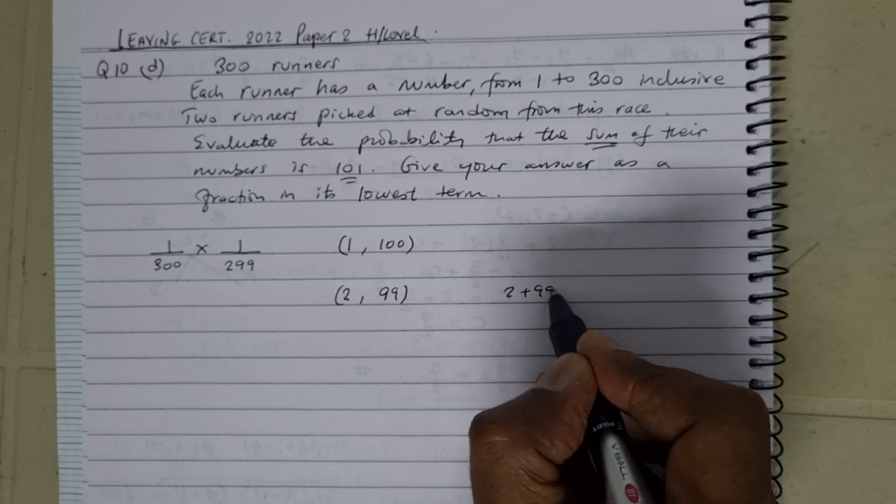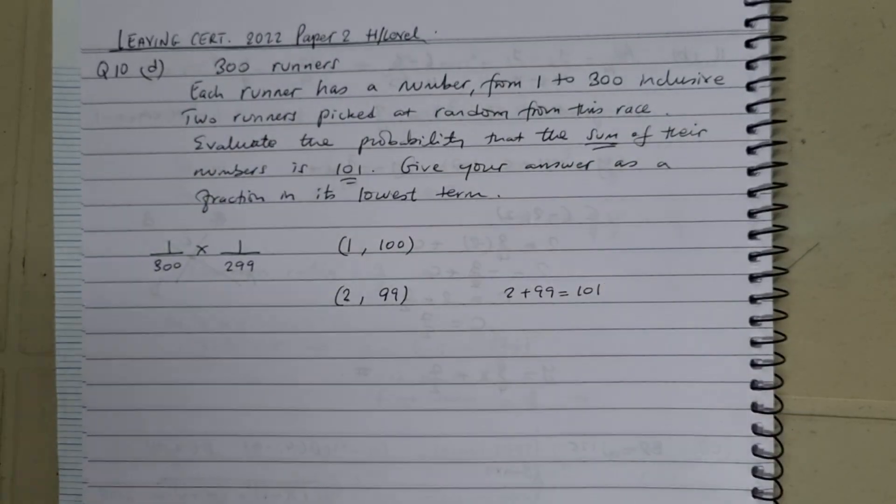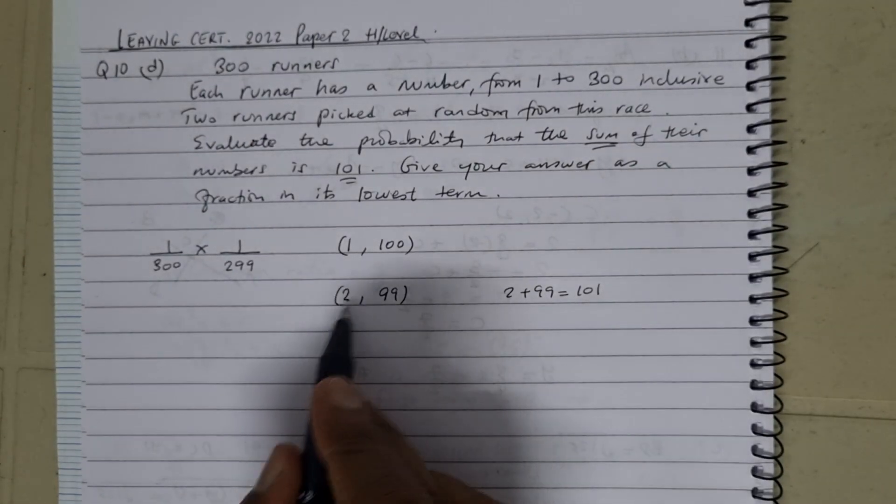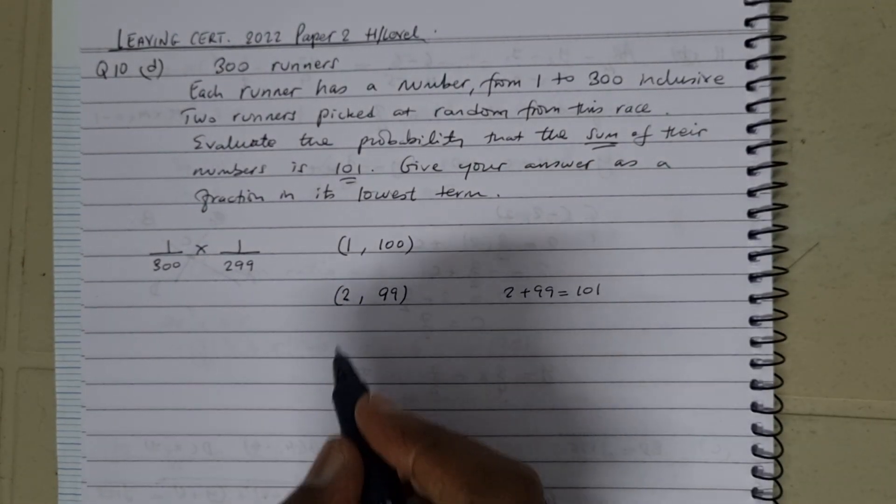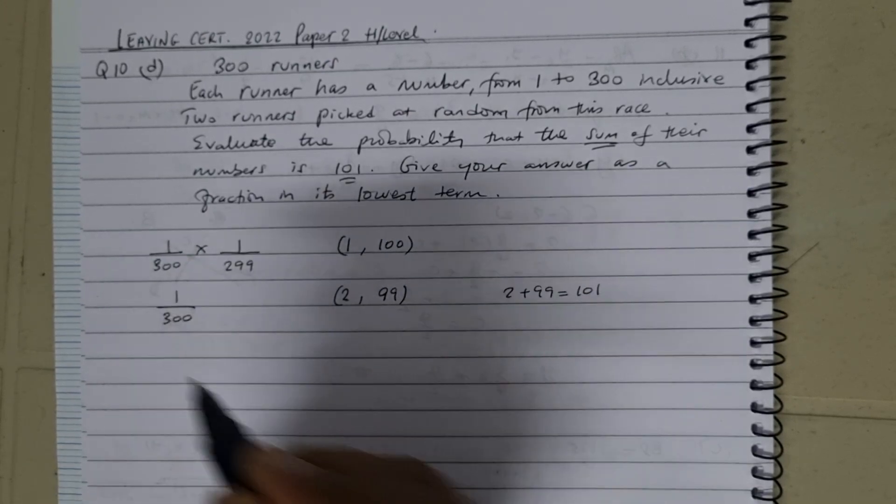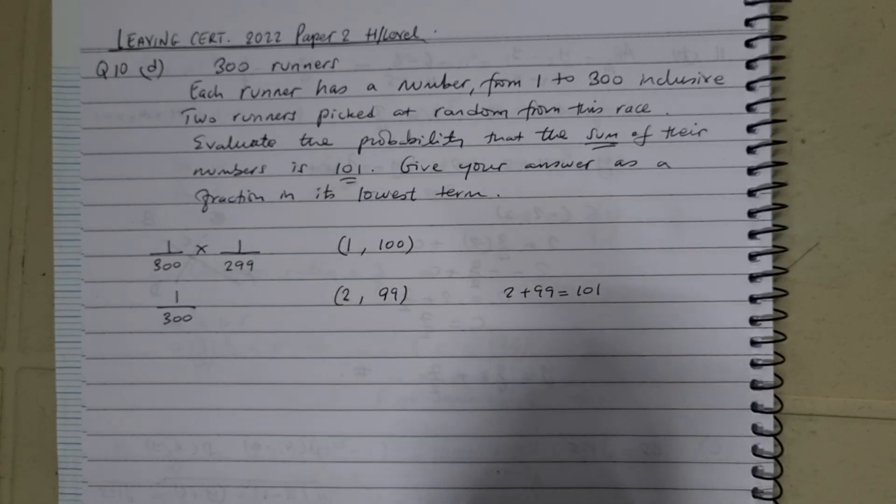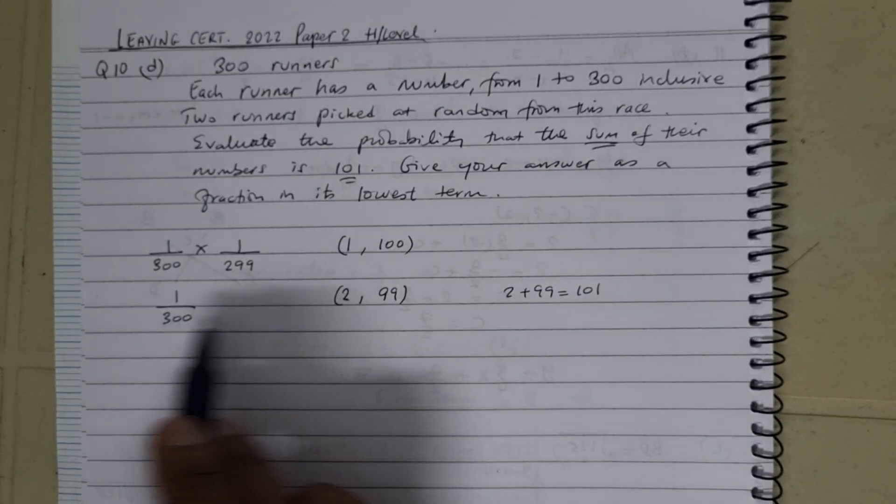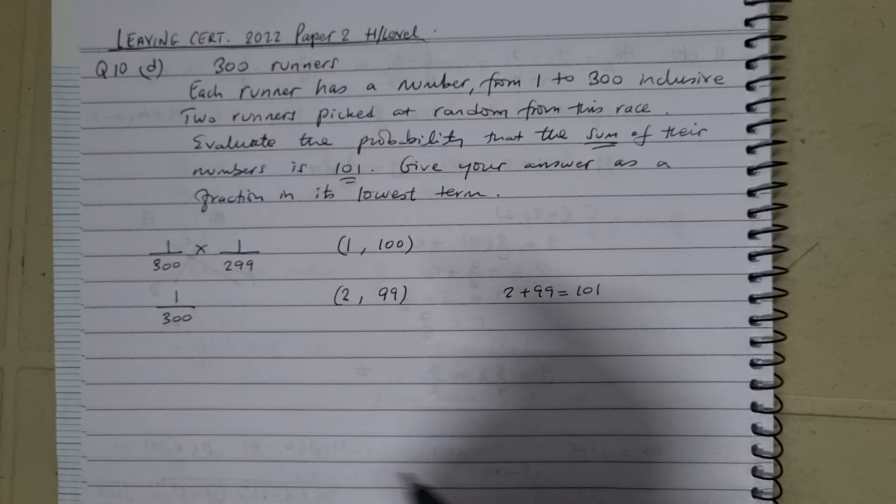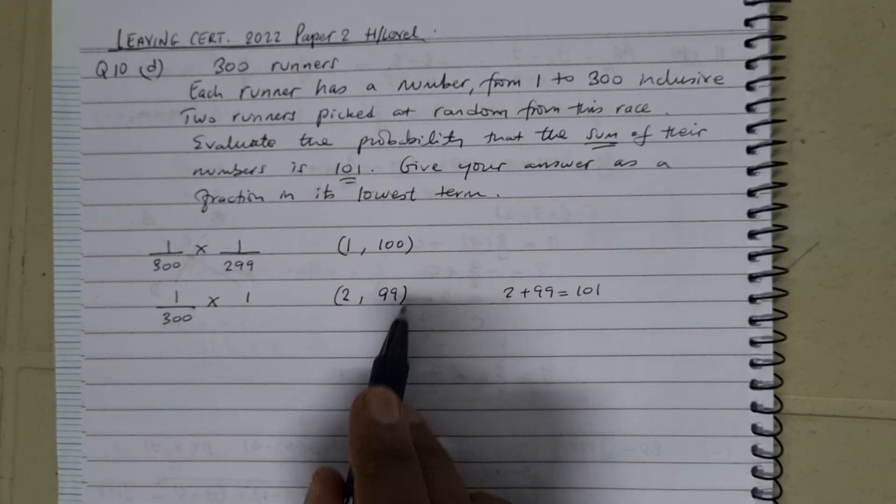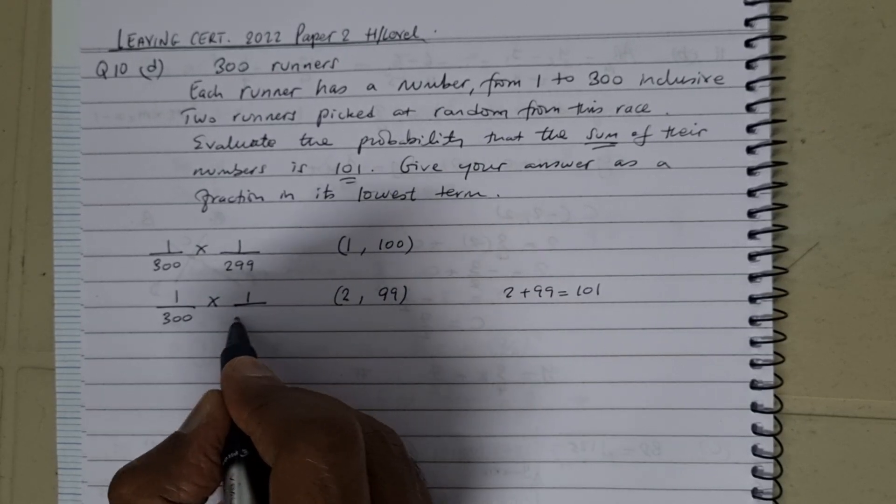Now let's say the runner has number 2. Then my next one's going to be 99, because 2 plus 99 is 101. So this is going to give me a probability of—if the person has number 2, the runner is one of the 300, that's our chance of picking a runner who's got number 2, 1 over the 300 runners. Then the next one will have the number 99, but this time over 299 because the first one's already been picked.